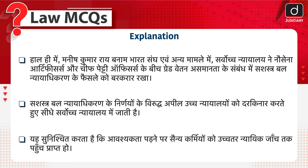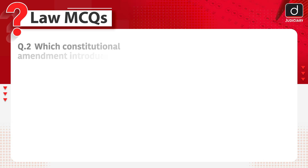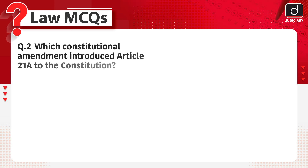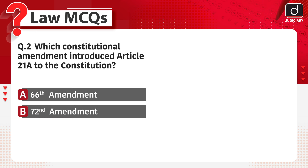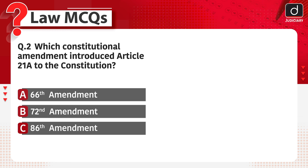Next question: which constitutional amendment introduced Article 21A to the Constitution? Options: 66th Amendment, 72nd Amendment, 86th Amendment, or 90th Amendment. Kis Samvaidhanik Sanshodhan dwara Samvidhan mein Anuched 21A joda gaya? 66th, 72nd, 86th, ya 90th Sanshodhan?